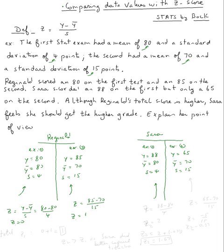Now z-score for Sarah for exam one, y will be y minus y-bar over 4, that's 8 over 4, which is 2. For exam two, that's a z-score.